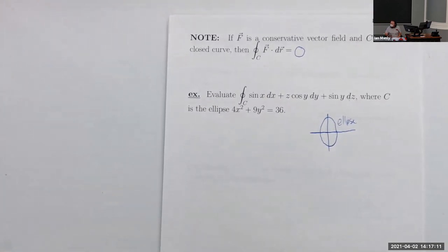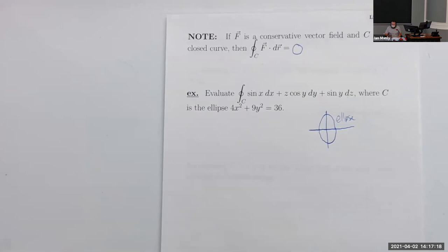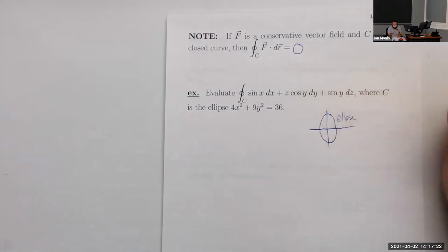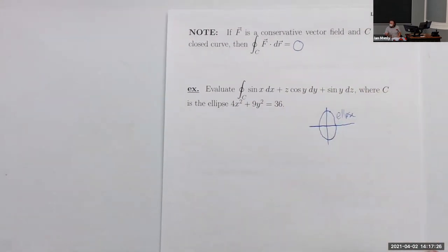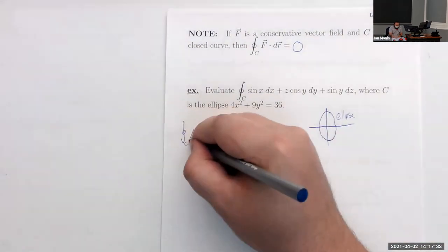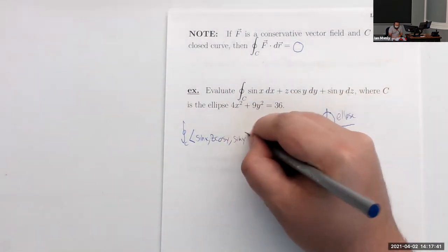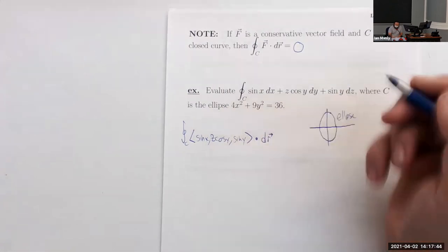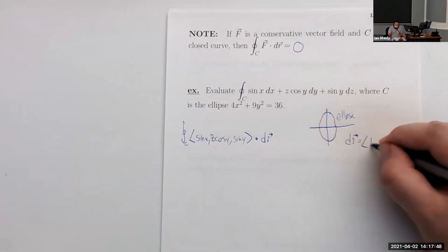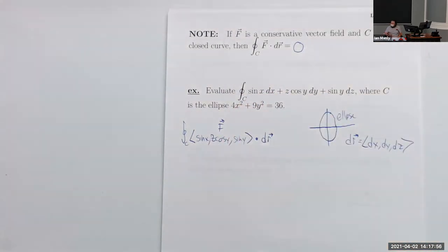Another way we could write this circulation integral is the vector field (sin x, z cos y, sin y) dotted with dr, where dr is the differential vector with components dx, dy, and dz. So even though it didn't look like it at first, this is just another version of f dot dr. If we can verify that this vector field is conservative, we know it's just going to be zero.